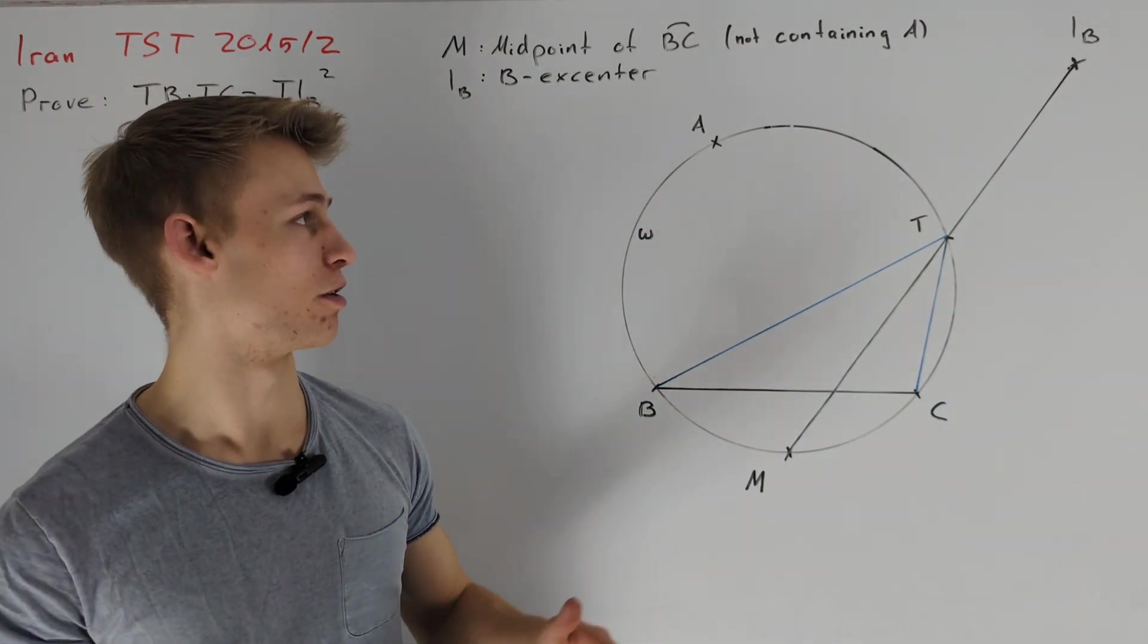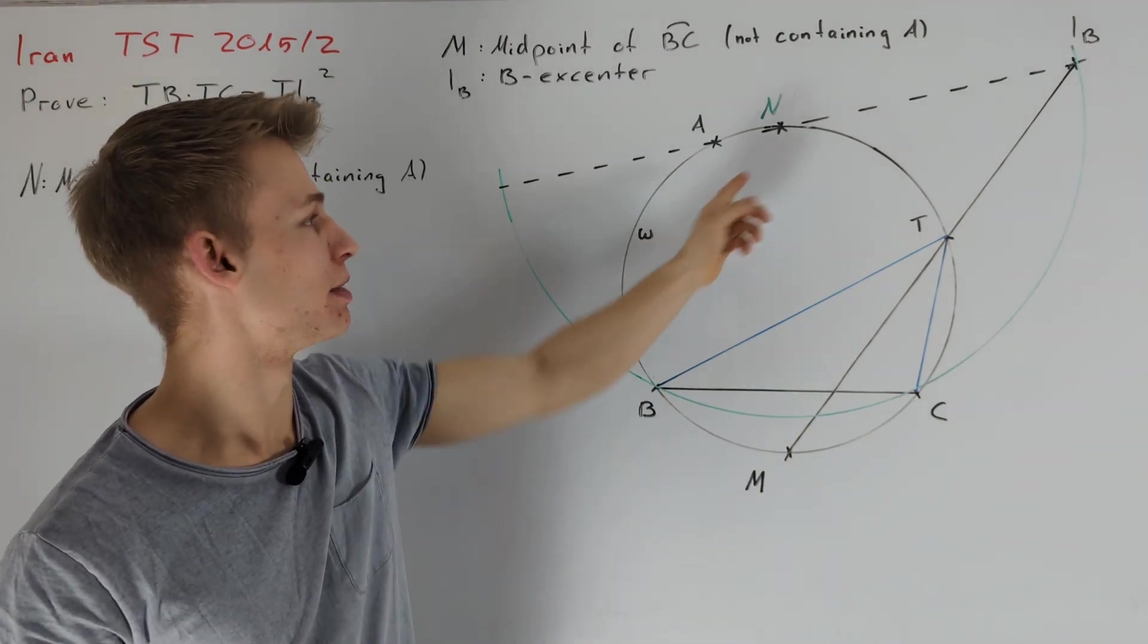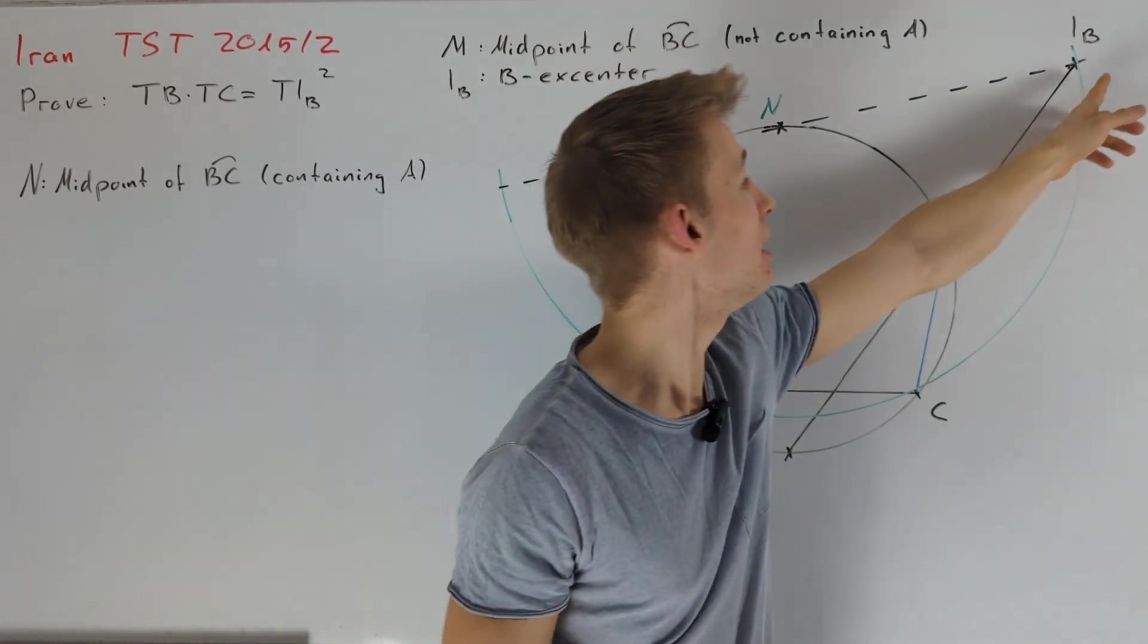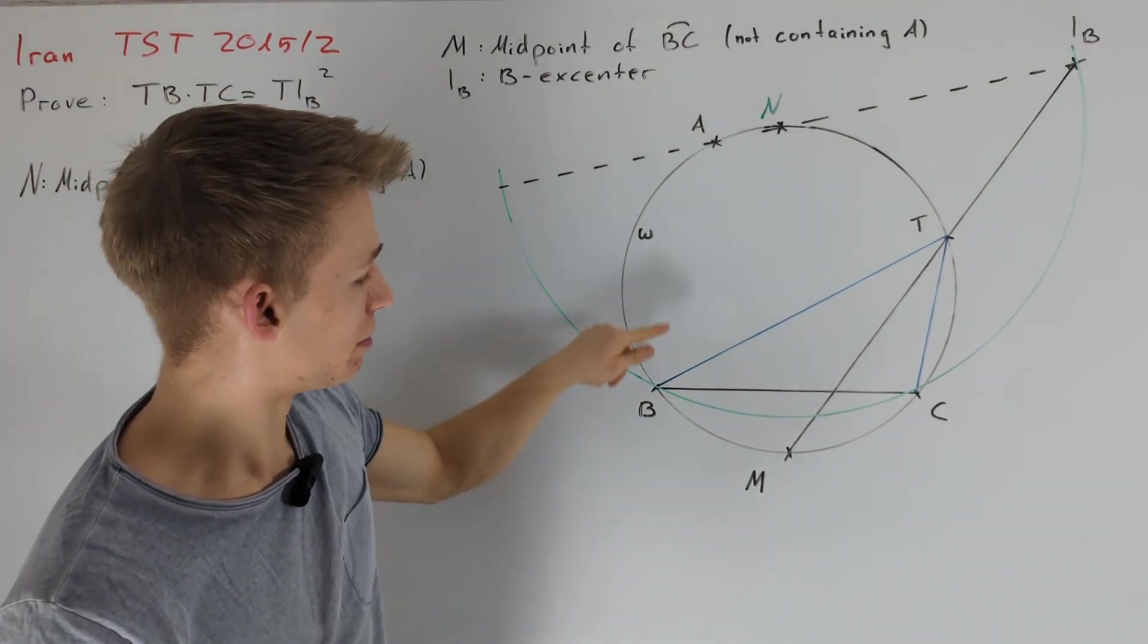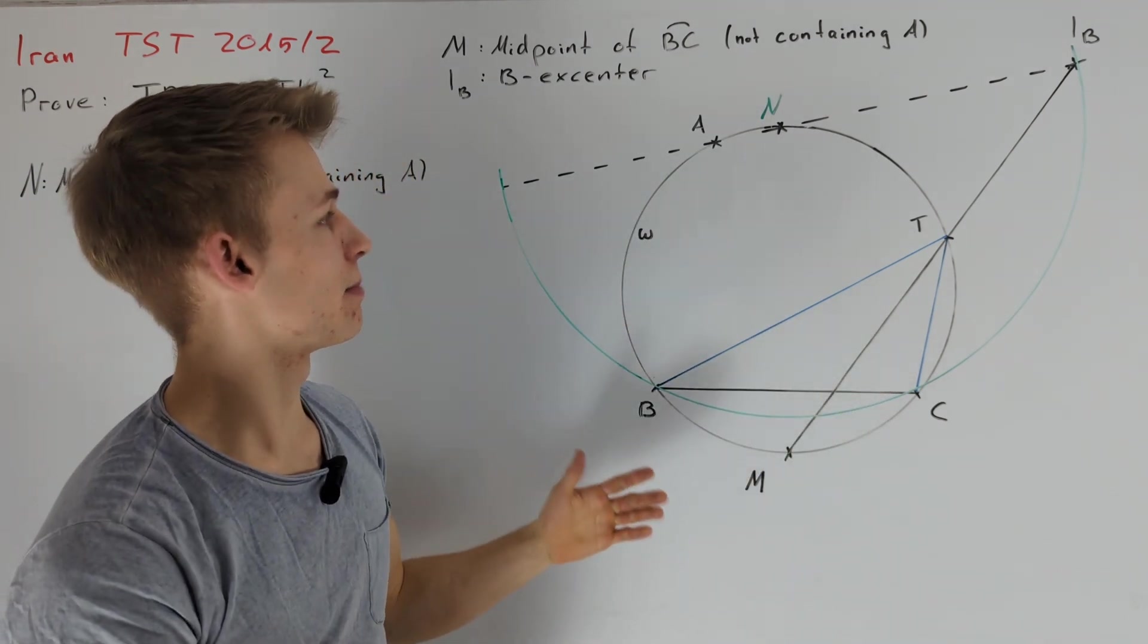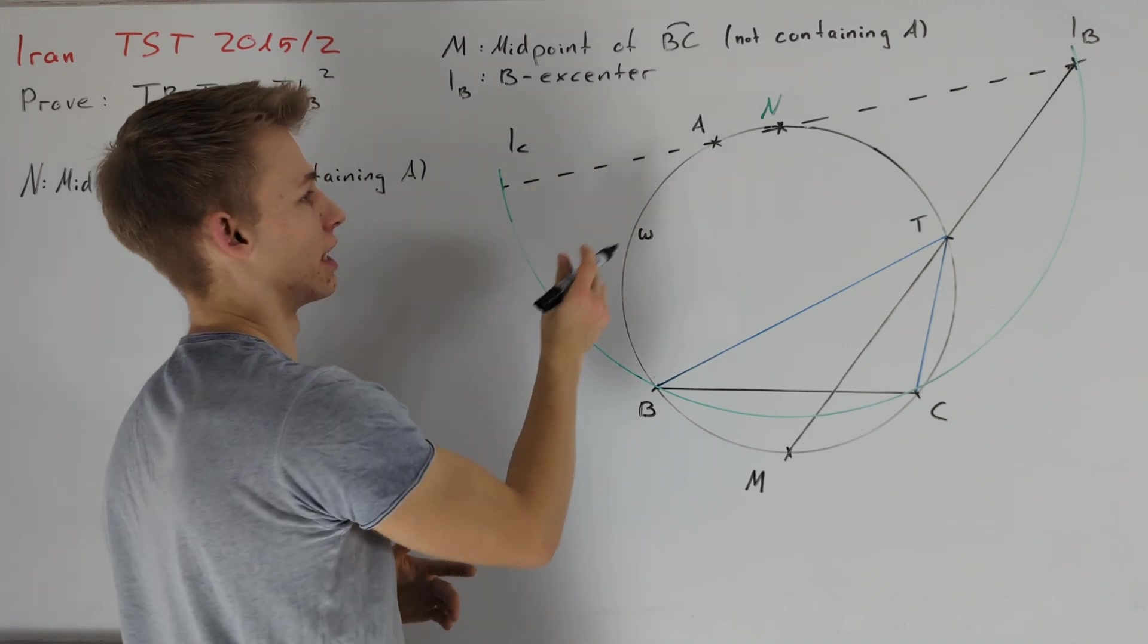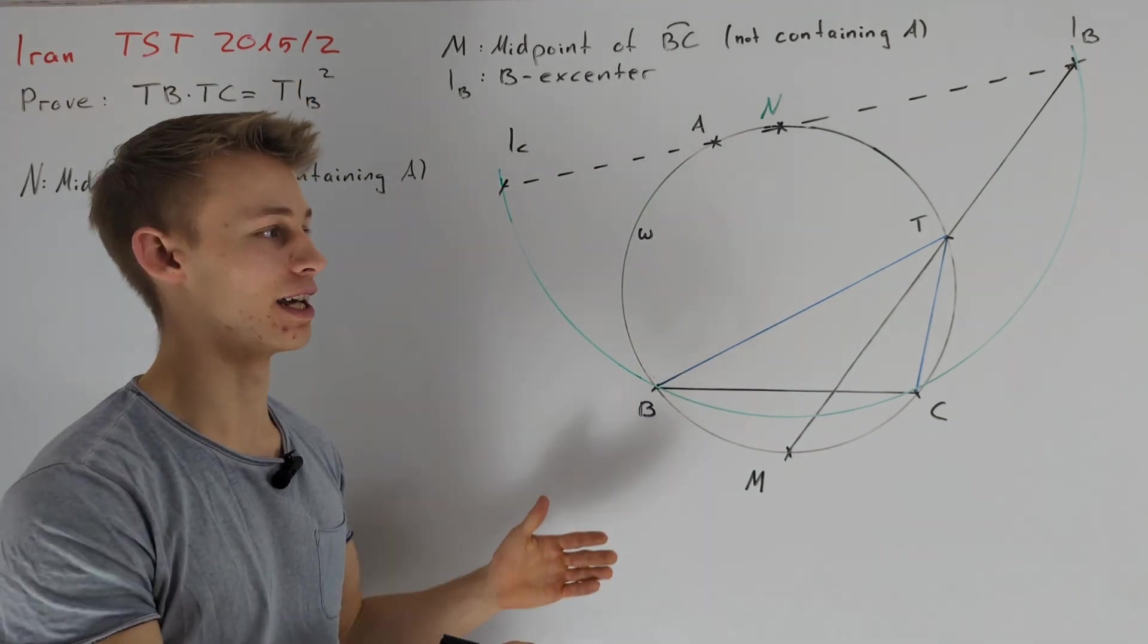We indeed have such a property for our point IB, which is the following. If we define N to be the midpoint of arc BC containing A, then IB lies on the circle with midpoint N and radius NB. Of course, NC is equal to NB. And thus, by symmetry, we also know that the C-excenter IC also lies on the circle, if the claim is true. This helps us to prove our claim.